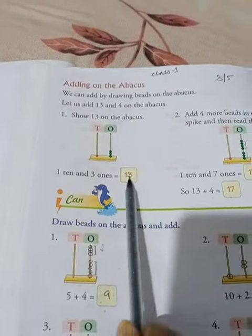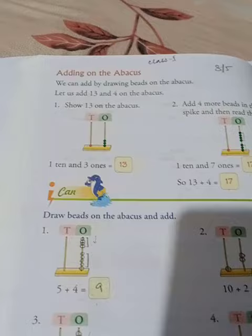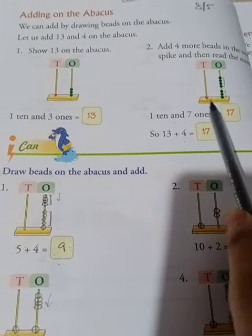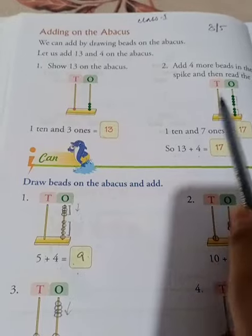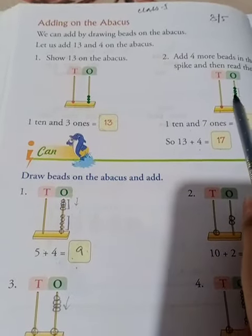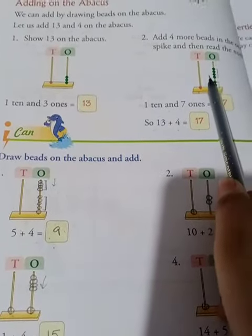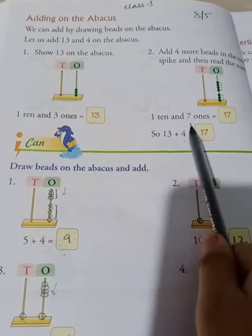3 ones, that means 13. So we add 4 more. Here see, in ones place we add 4 more. So 1 ten and 1, 2, 3, 4, 5, 6, 7 - seven ones. So 1 ten and 7 ones equals 17.